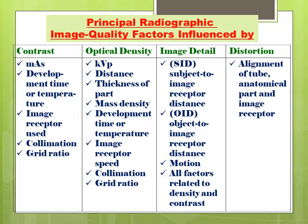Image detail is influenced by SID (source to image receptor distance), OID (object to image receptor distance), and motion. Distortion is influenced by the alignment of the tube, the anatomical part, and the image receptor.